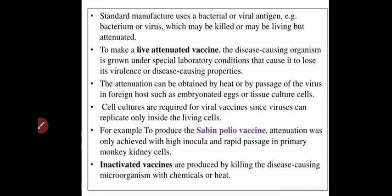The polio virus was grown inside monkey kidney cells to attenuate the virus, and these attenuated viruses were used for the development of the Sabin polio vaccine. The second type is the inactivated vaccine. Inactivated vaccines are produced by killing the disease-causing microorganism with chemicals or heat. The bacteria or viruses that cause infection are killed and then an immunological preparation is made which is used as a vaccine.